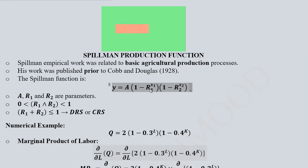So we have 1 minus each term, and all these terms are getting multiplied. We know that A, R₁ and R₂ are the parameters. Talking about the range of R₁ and R₂, both of them are between 0 and 1. So if we add them we get a value which is likely to be less than 1 or at most equal to 1, which means that we will be facing decreasing returns to scale or constant returns to scale.